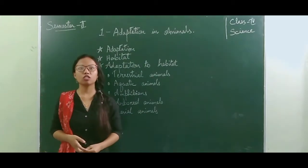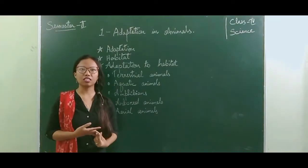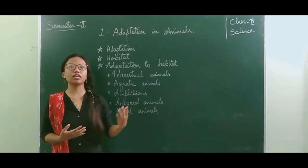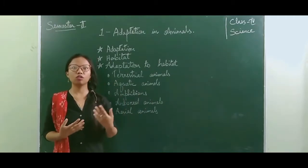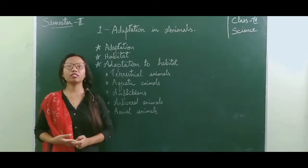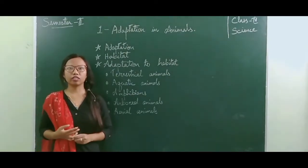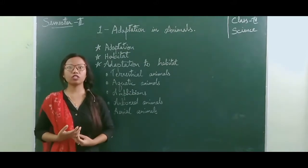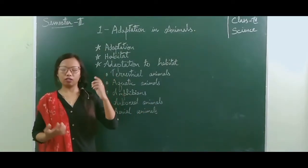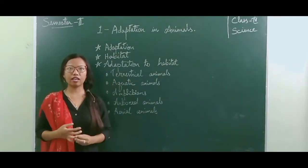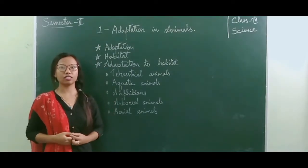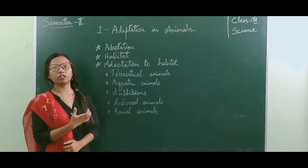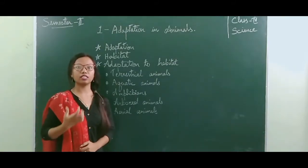Next we have arboreal animals. Arboreal animals are those animals which live on trees — for example, monkeys and squirrels. These animals live only on trees and move from one tree to another to survive, spending most of their time on trees. Monkeys have very strong and muscular tails which help them to swing from one tree to another. Squirrels and lizards have very strong claws which help them to climb trees. They also have spines and pads which help them to grip the tree so they don't fall down.